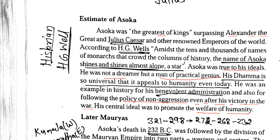Ashoka was the greatest king, as you know very well. He has surpassed Alexander the Great and Julius Caesar. He was the well-renowned emperor of the world. There were tens and thousands of names of monarchs in world history, but the name of Ashoka shined like a star.